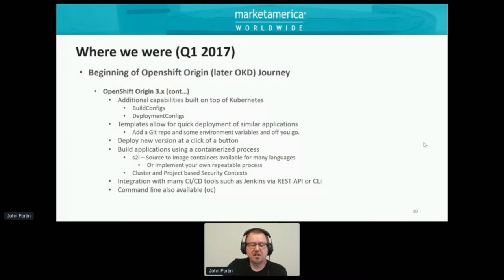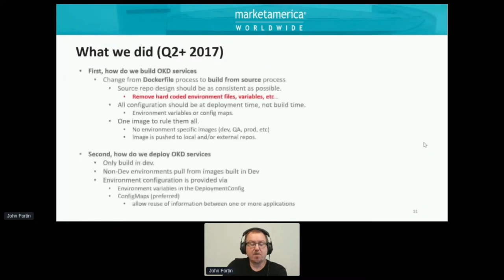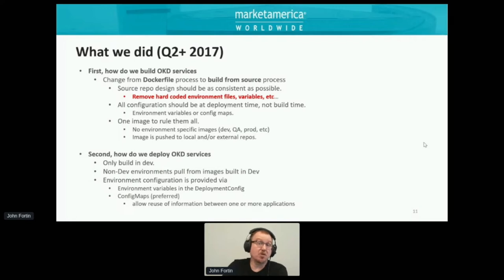So that was Q1 of 2017. We were pretty happy with OpenShift — it seemed to fit all the things that we wanted in a containerized platform. Now we had to figure out how are we going to actually use OKD — how do we move our processes, our applications, and our services, and how do we build our services?